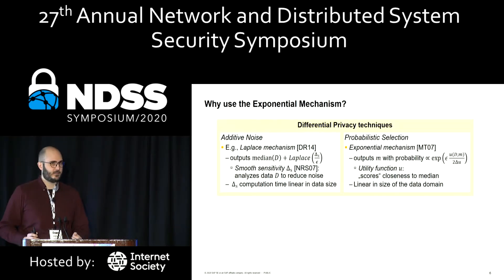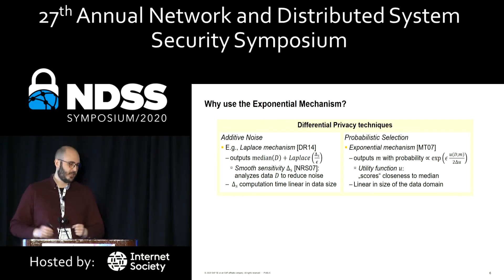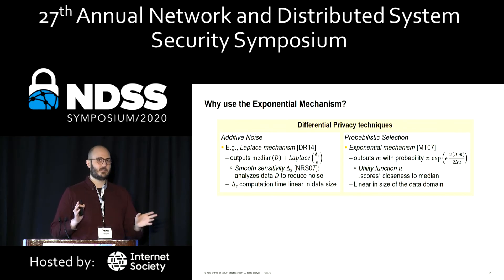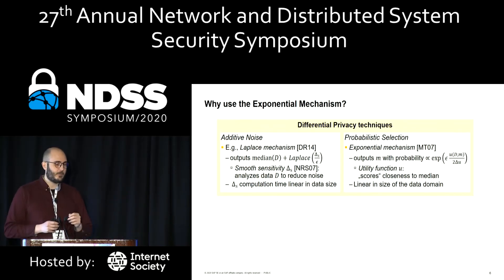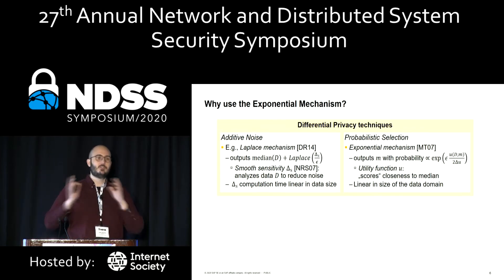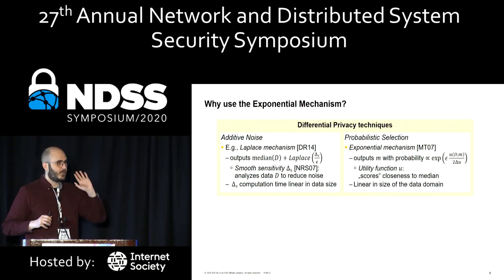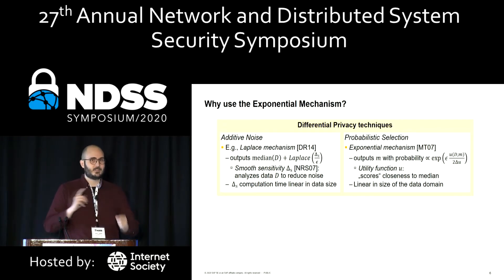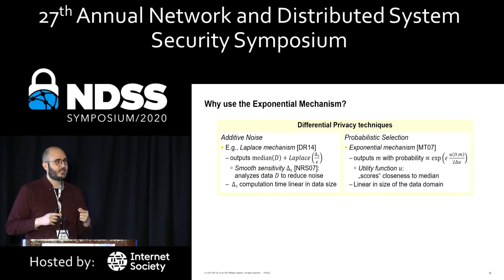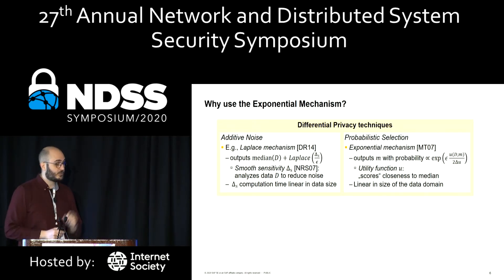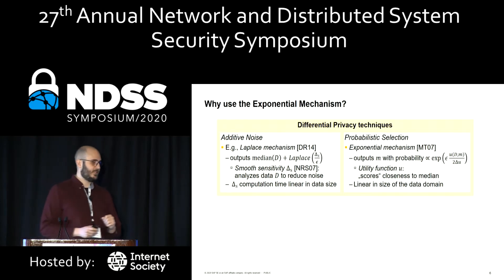There are different techniques to implement differential privacy. We will be using the exponential mechanism. The first technique is additive noise — the Laplace mechanism — where we compute the median and add noise to that value before releasing it. We have to carefully select the noise. The first approach uses noise scaled to the entire data domain, which makes the result meaningless. There is great work by Nissem et al. on reducing that noise called smooth sensitivity, which is linear in the size of the data.